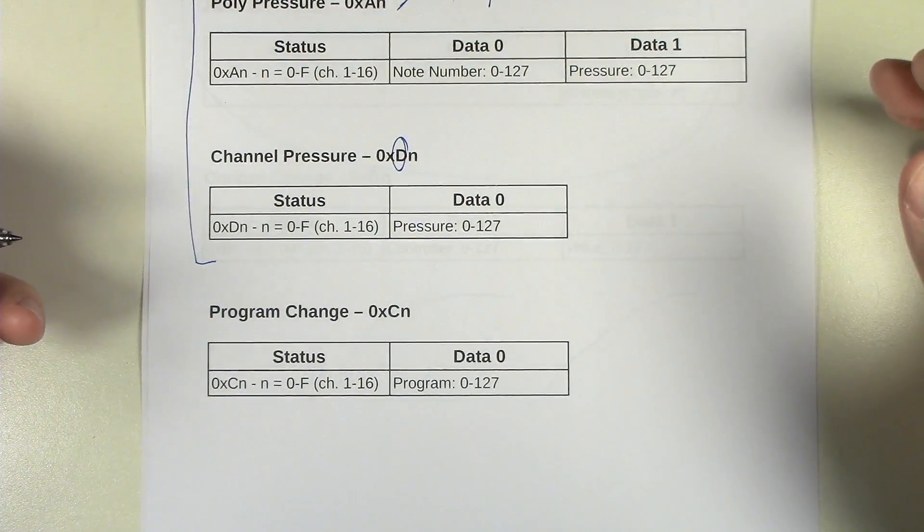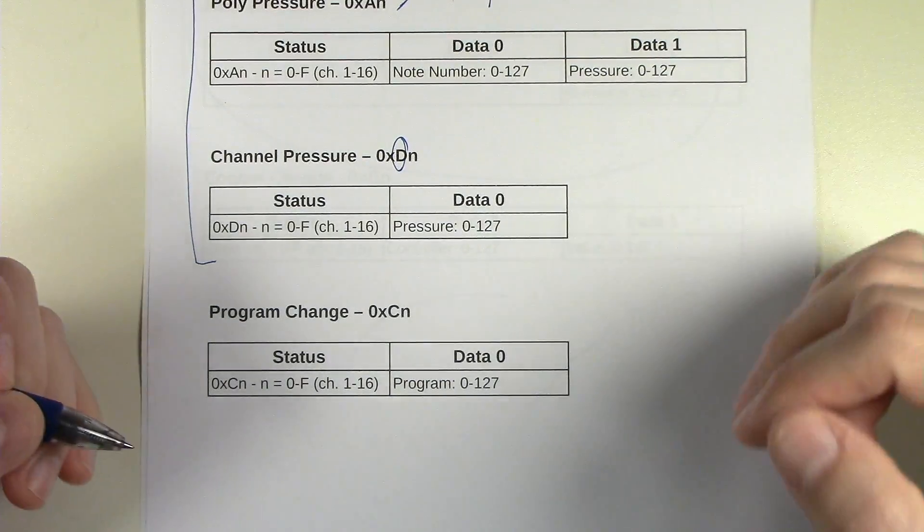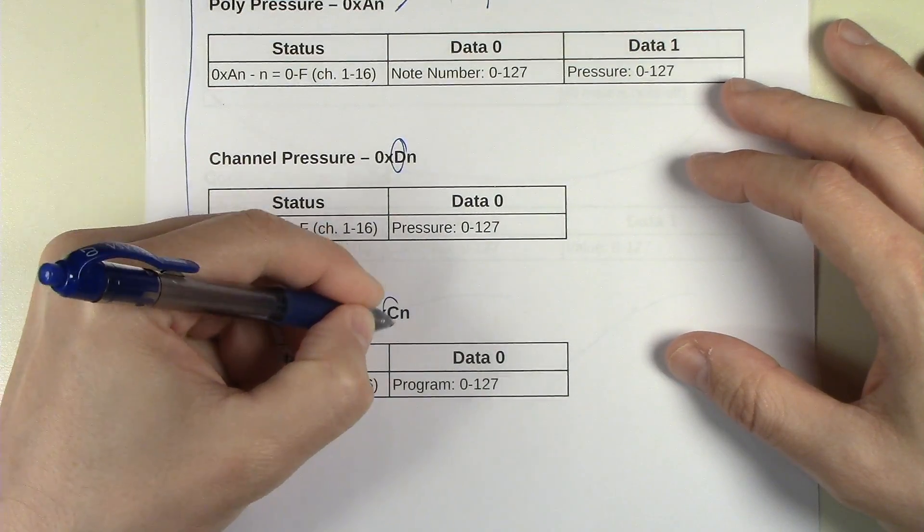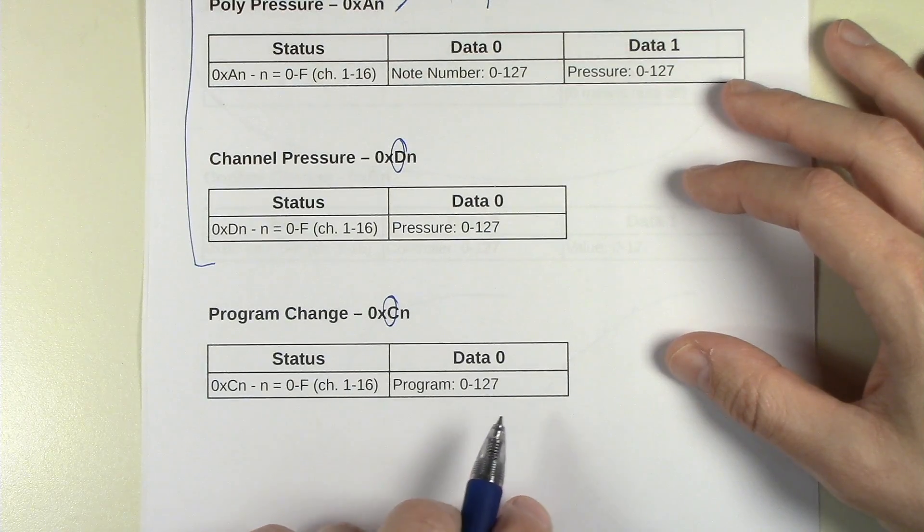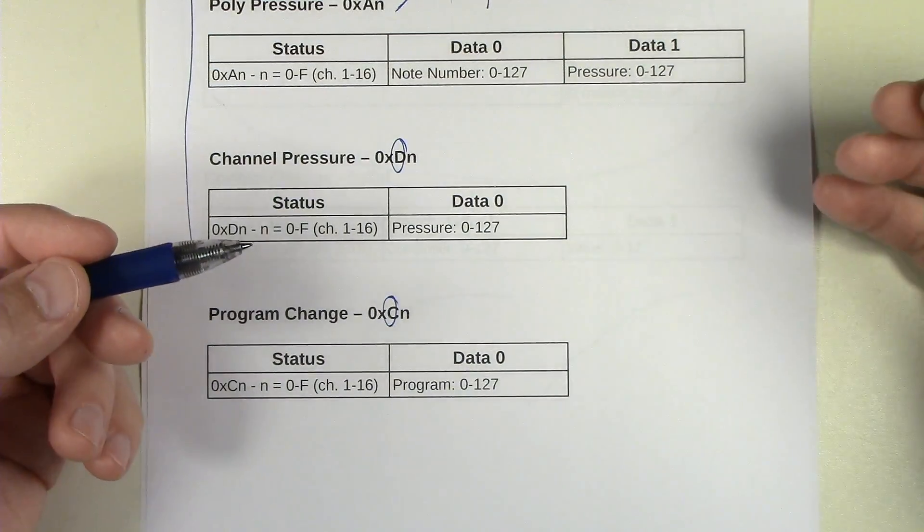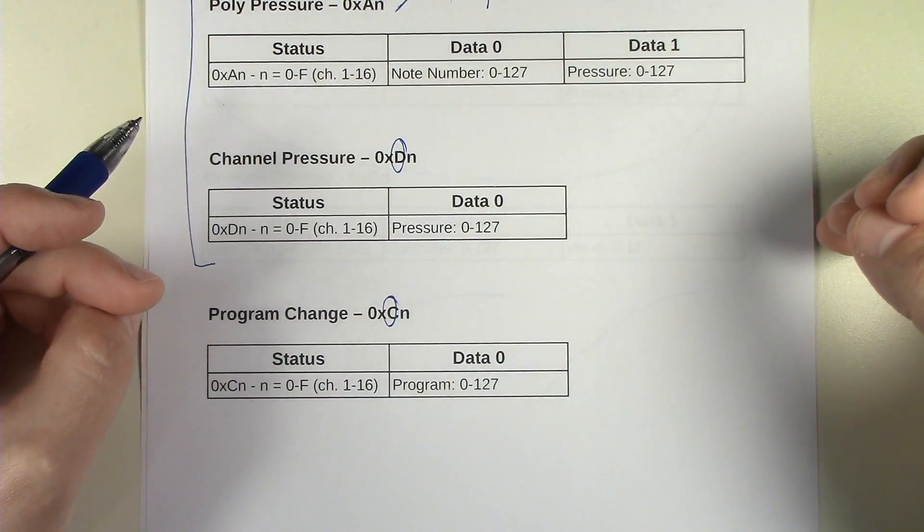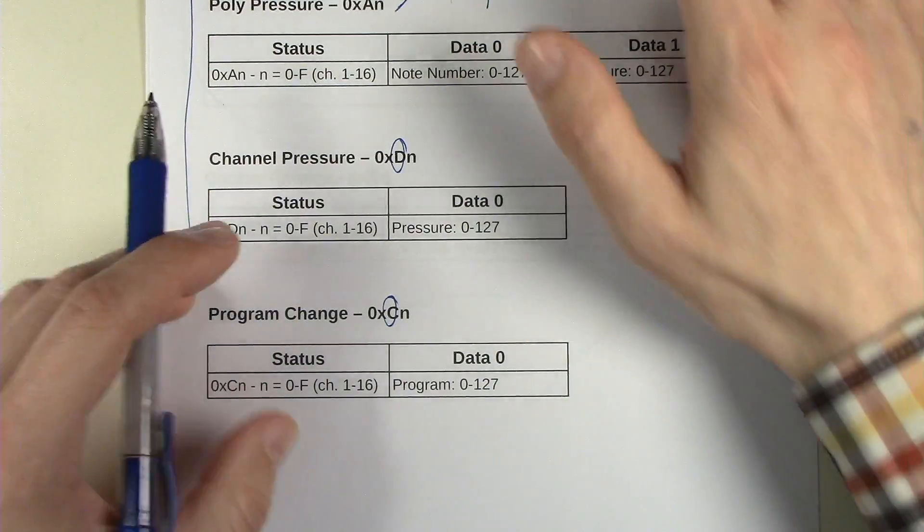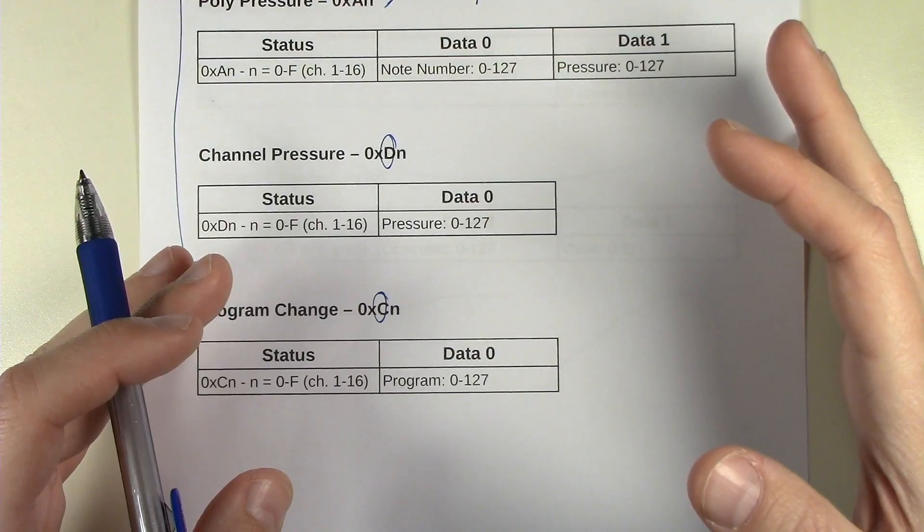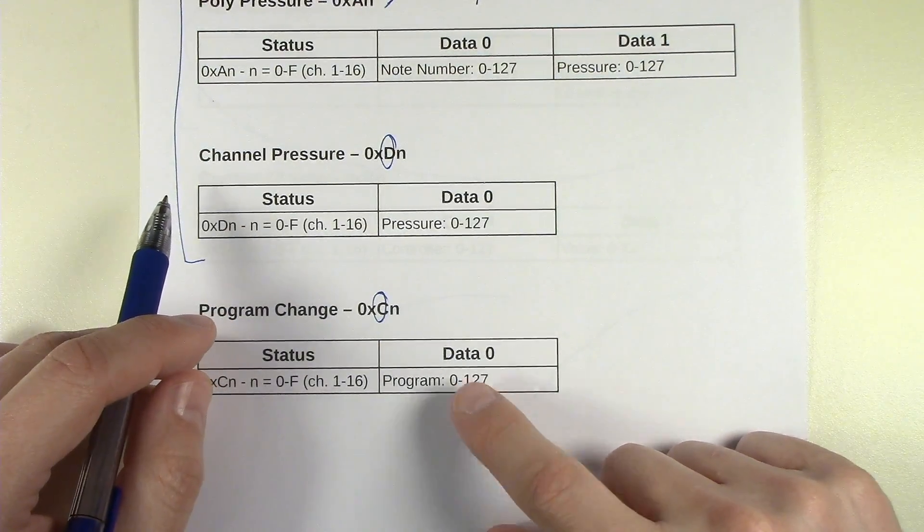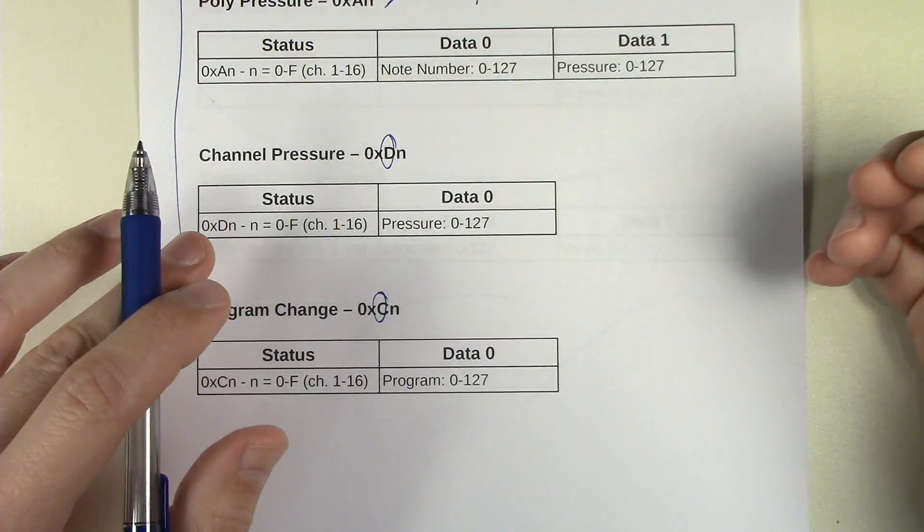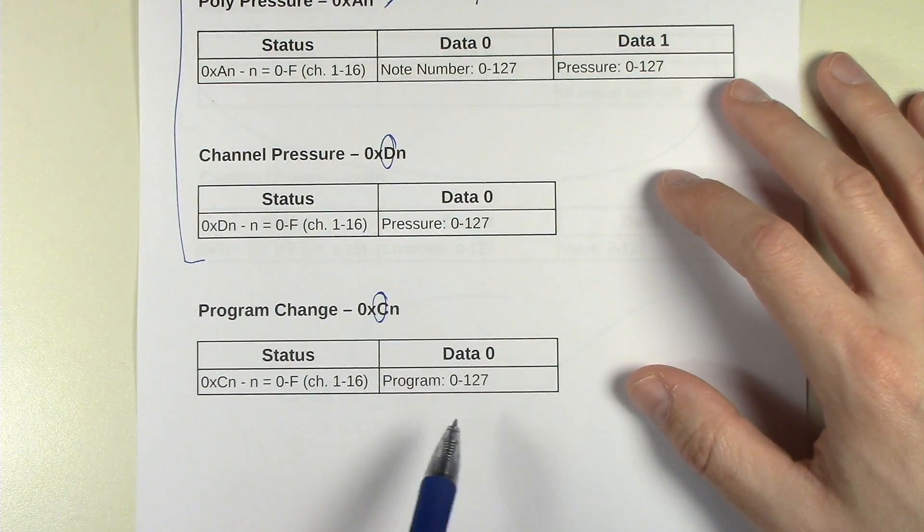And then we have program change, and this is the last kind of channel message. This is when you want to change a preset on a synth. You send a program change message, and this only has two bytes. It's the C and then the channel number, and then it sends a program number from 0 to 127. And that's basically the reason why mostly on a synthesizer you'll see groups of programs in banks of 128. And in fact there's a special way, it uses a control change actually, there's a special way to switch between different banks so that we can actually have more than just 128 presets or programs on our synth. But generally once you're inside a bank, generally this is how you would switch between those individual programs.